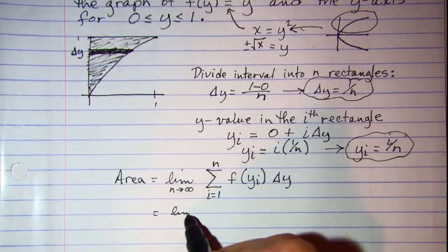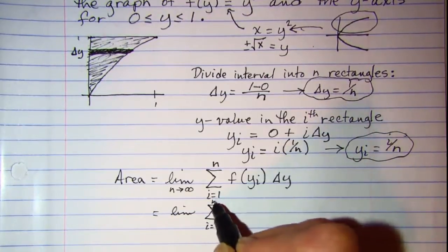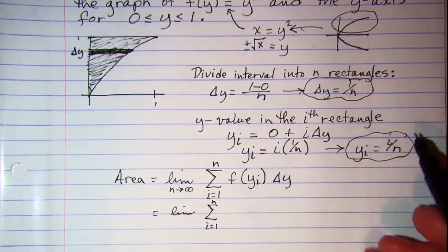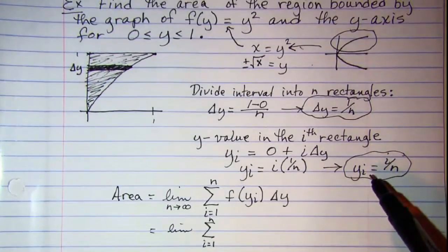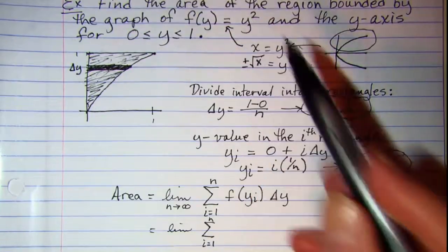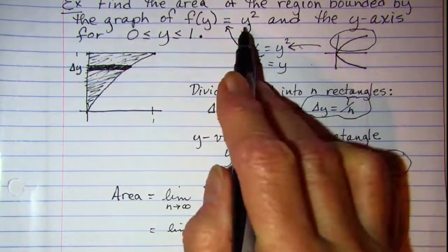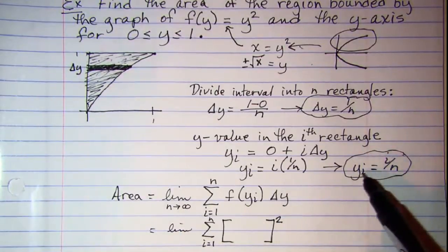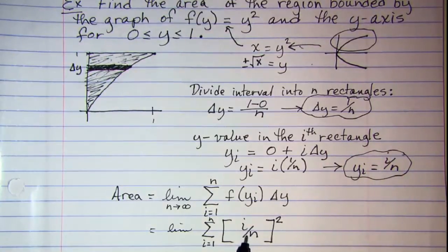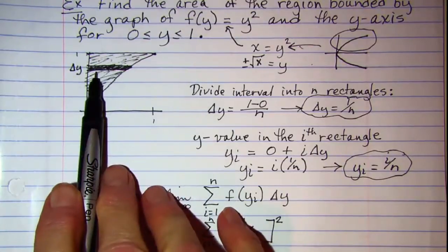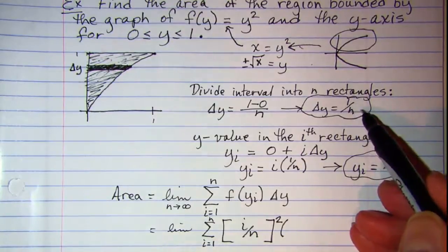The area will be limit as the summation goes from i to n. So f of yi means I'm filling in yi into this function. So I have y squared and then yi is i over n. So this is my length of my rectangle. And then multiply that by delta y which is 1 over n.